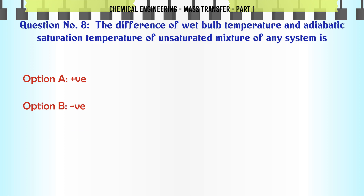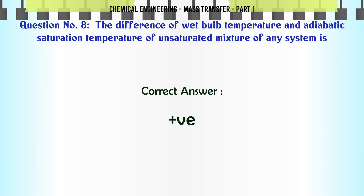The difference of wet bulb temperature and adiabatic saturation temperature of unsaturated mixture of any system is: A. Plus V. B. V. C. Zero. D. None of these. The correct answer is Plus V.